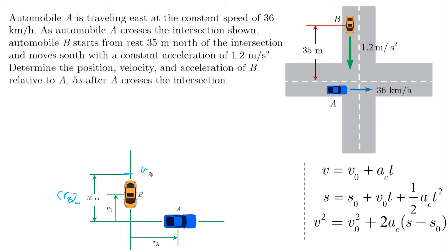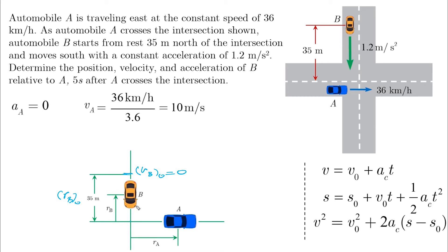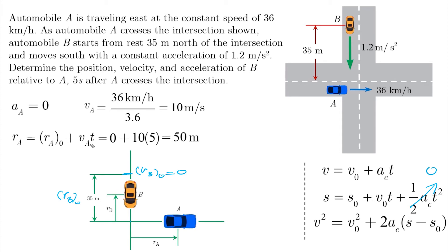For the horizontal car A, it has zero acceleration — AA equals zero — and it has a constant speed of 36 kilometers per hour. Dividing by 3.6 gives us 10 meters per second. For car A, we use the equation RA equals RA-naught plus VA times T, which leads to 50 meters after 5 seconds.